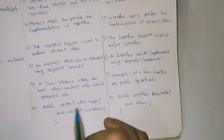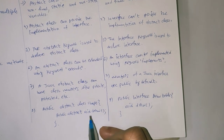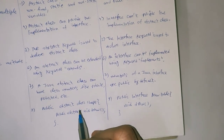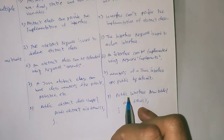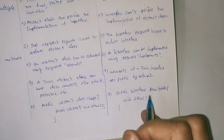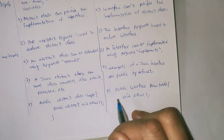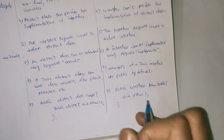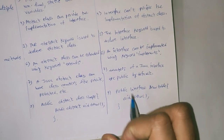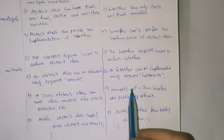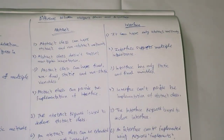Here is the structure: 'public abstract class Shape' contains an abstract method 'public abstract void draw()'. For an interface: 'public interface Drawable' contains 'void draw()'. A class implements it as 'class A implements Drawable' and provides the implementation of the draw method. This shows the structure of both an interface and an abstract class.